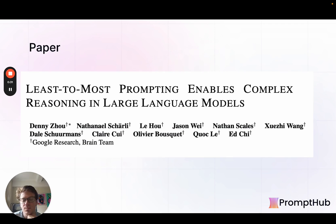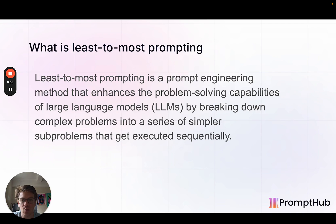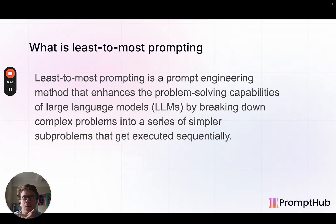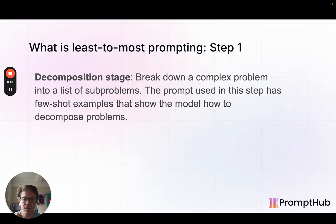The paper, which will be linked below, came out in 2023. The core of what least-to-most prompting does is that it basically tries to break down problems into subproblems and then solve those subproblems sequentially. Two steps. First, it takes a problem and decomposes it down to subproblems.